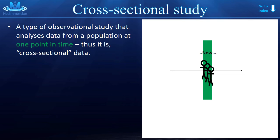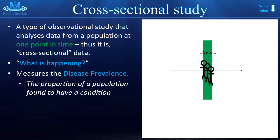And it asks the question, what is happening? Cross-sectional studies are good at measuring the disease prevalence, which is the proportion of a population found to have a condition at a given point in time.